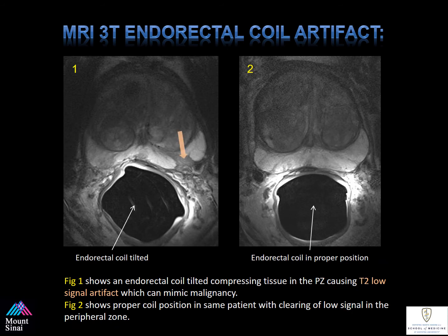Please notice these two prostate MRIs, both with an endorectal coil in the same patient. Notice the first image on your left — there's a signal defect created by the abnormal rotation of the endorectal coil. Once the coil was repositioned, the artifact completely resolved, and you have a normal prostate MRI. It's important to have a relationship with the MR technologist who places the endorectal coil so they know to check and confirm proper probe placement.